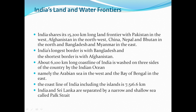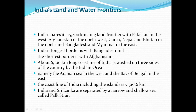About 6,200 kilometer long coastal line of India is washed on three sides by the Indian Ocean. The Indian Ocean, namely the Arabian Sea in the west and the Bay of Bengal in the east, surrounds India. The coastline of India including the islands is 7,516.6 kilometers. India and Sri Lanka are separated by a narrow and shallow sea called the Palk Strait.